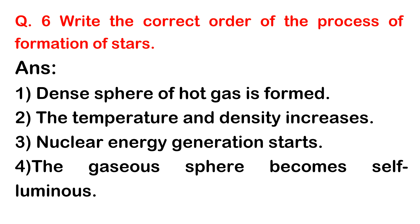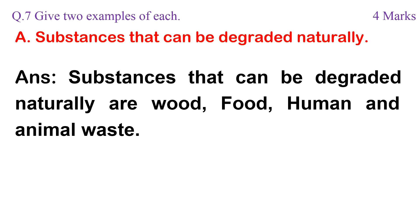Nuclear energy generation starts when the gaseous sphere becomes self-luminous. Substances that can be degraded naturally — answer: substances that can be degraded naturally are wood, food, human and animal waste.